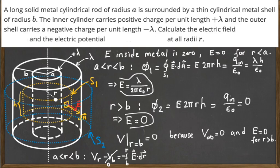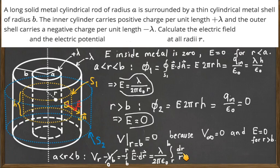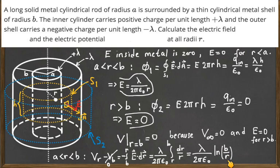Setting V(b) equal to zero, we interchange the integration limits — putting b on top and r on the bottom — and change the sign of the integral. The integrand is E dot dr, which gives a 1/r factor, and the integral of 1/r is a natural logarithm. Evaluating the limits gives the final expression: V(r) equals lambda divided by 2π epsilon-zero, times the natural logarithm of b divided by r, where r is any point between the two cylindrical shells.